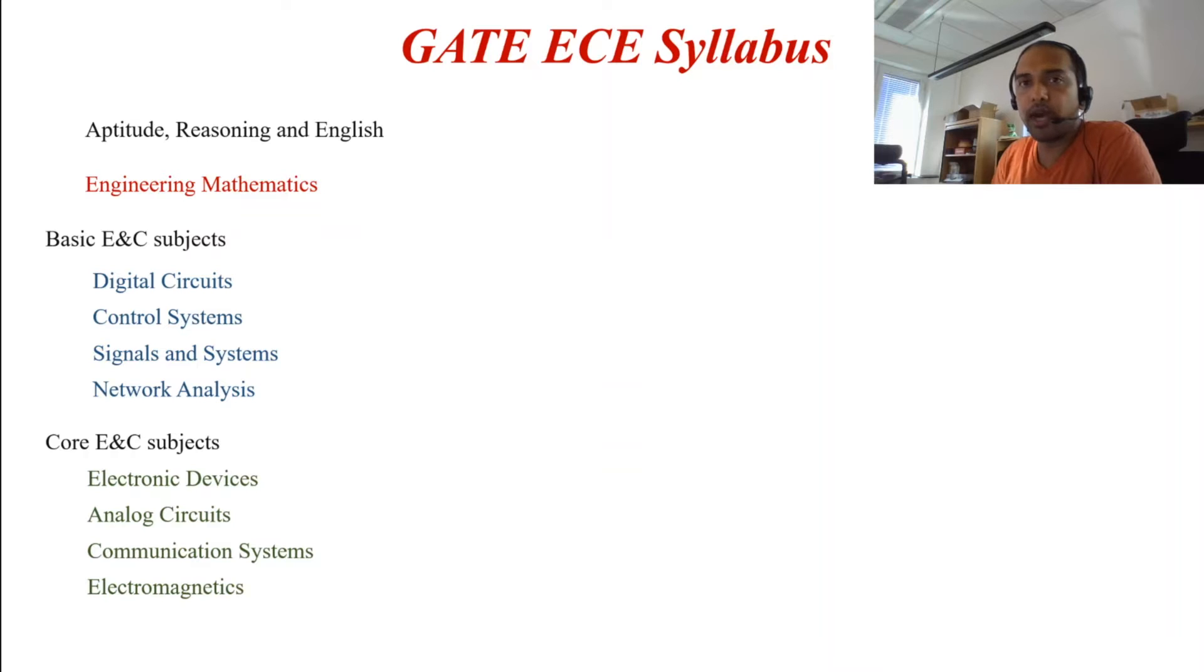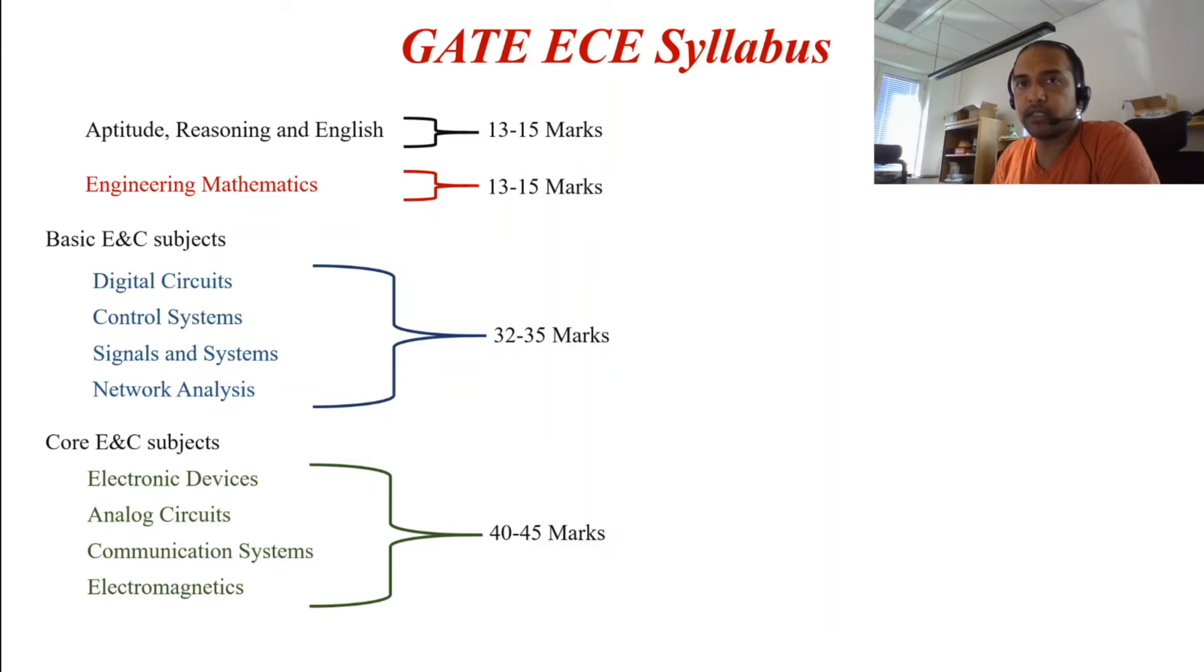Now, let's see how much marks these come in for. For the aptitude reasoning, you have 13 to 15 marks worth of questions. For engineering mathematics, it's the same again which is 13 to 15 marks. In the basic subjects, you have 32 to 35 marks, and for the actual core subjects of electronics and communication, you have 40 to 45 marks in the question paper.